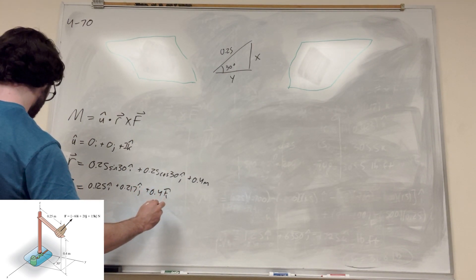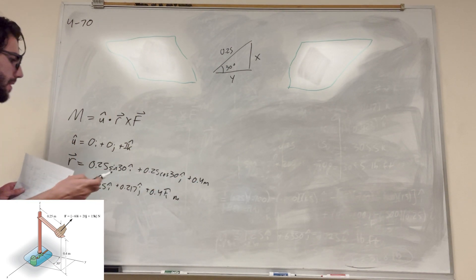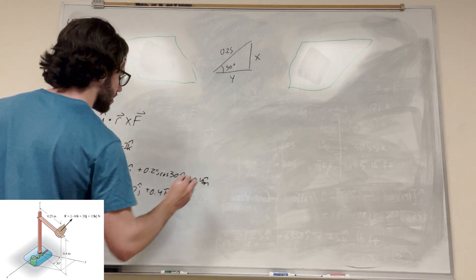this is 0.125i plus 0.217j plus 0.4k. And this is, what, in meters? Yeah, it's in meters. Cool. Oh, I forgot, okay. Okay, cool.